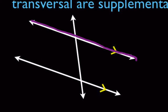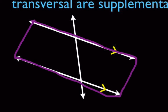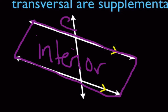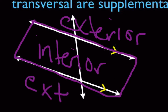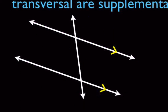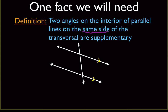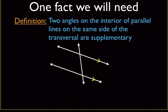The term 'interior' is going to be very important. Think about the parallel lines making a rectangle. The interior is inside those two lines, and the exterior would be outside those two lines. The term just means inside and outside. They also said that the angles are on the same side — either the left side or the right side of the transversal.